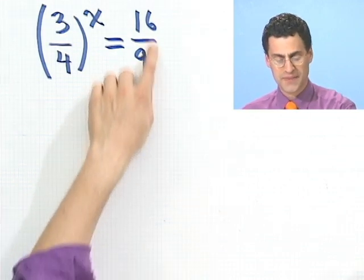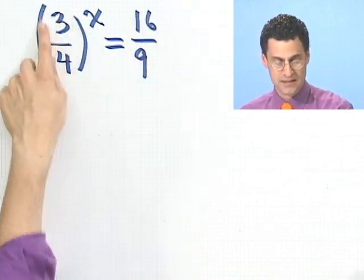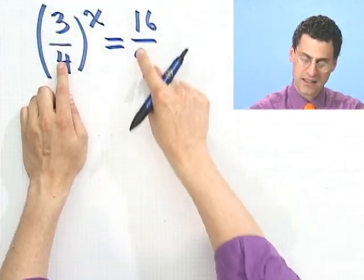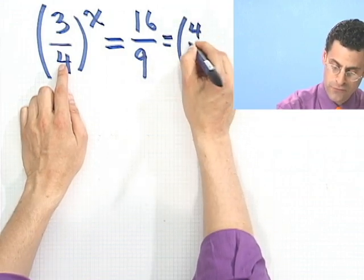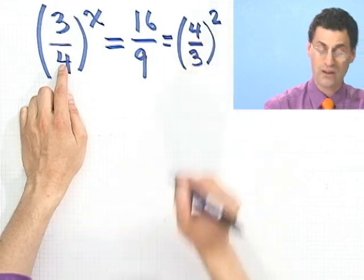One is to say, I'm going to try to get this thing to be the same base as this. You can see it's looking actually not bad. I can make this thing, without too much effort, into a 4/3 by just squaring.